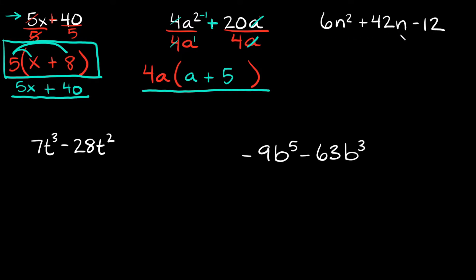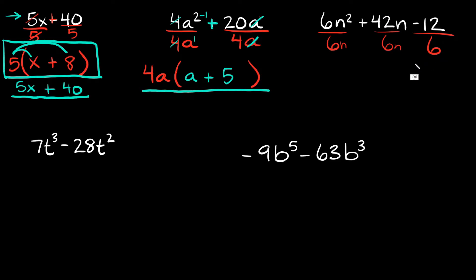Now this next one has three terms: 6n squared plus 42n minus 12. What's the biggest number or term we can pull out from all three? That would be 6 — we can pull a 6 from each of them. You might wonder why we can't also pull out an 'n'. Well, this last term, the 12, doesn't have an 'n' on it. If you're going to pull something out from one term, you have to pull it out from all of them. So since we can't pull an 'n' out of the 12, we can only pull out a 6.